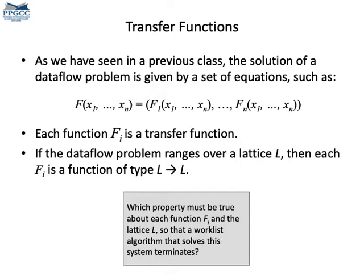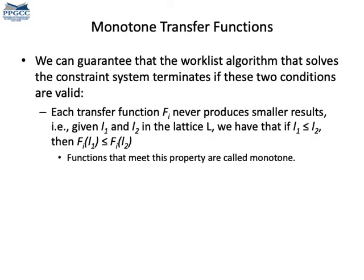So which property must be true about each transfer function and the lattice so that the worklist algorithm terminates? The first property is that the transfer functions must be monotone. In a way they can only add new information, they can never oscillate. Or in other words, if you grow the input, then you grow the output. I'm saying grow but reduce would work also. A function that only removes information or leaves it as it is, is also monotonic.